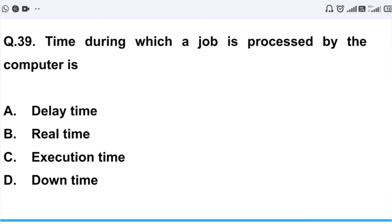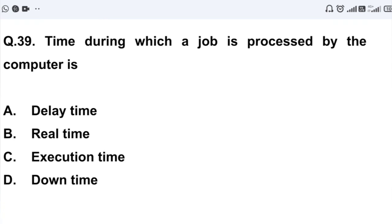Question number 39: Time during which a job is processed by the computer is - Option A: delay time. Option B: real time. Option C: execution time. Option D: downtime.